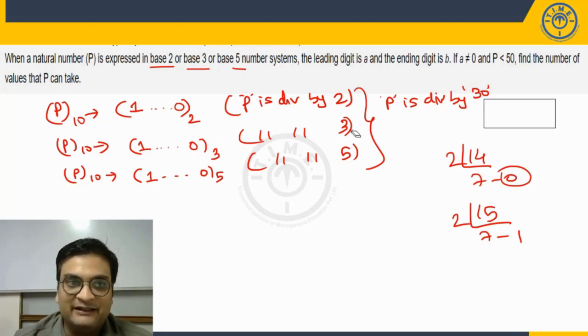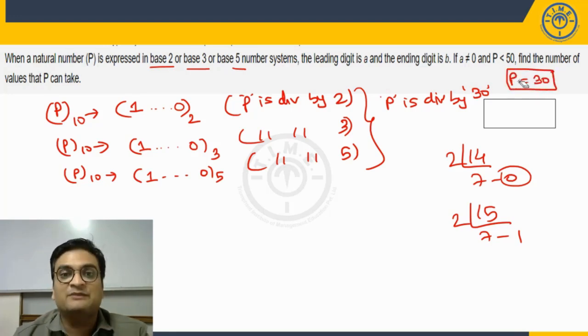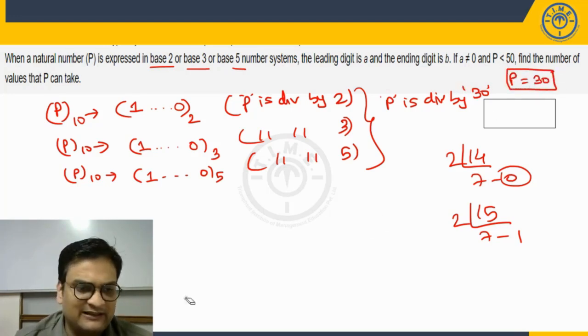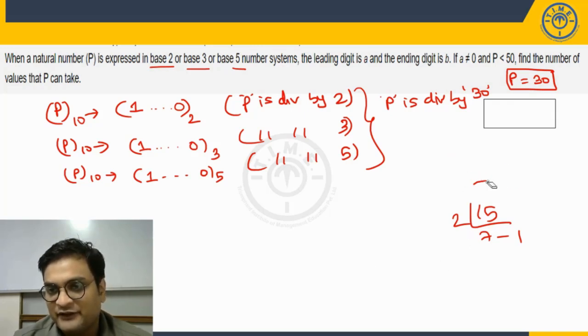P should be divisible by 30 and P should be a number less than 50. Thus, if it is divisible by 30, there is only one possibility - the number P can be 30. I cannot take 60 because it will exceed 50. Let us verify.